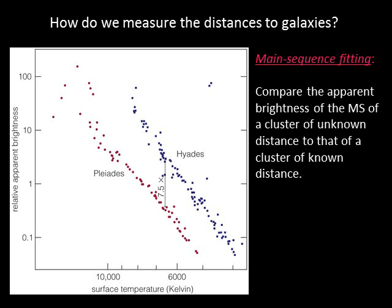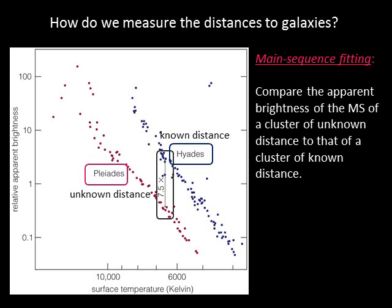Consider two clusters, the Hyades and the Pleiades. We know the distance to the Hyades from parallax, but we don't know the distance to the Pleiades. If we can measure the apparent brightness of both clusters and see that a star of a particular temperature in the main sequence of the Hyades appears seven and a half times brighter than a star of the same temperature in the Pleiades, we can use this information to scale the stars of the Pleiades to those of the Hyades and learn their true luminosities. Then the inverse square law allows us to calculate the distance.